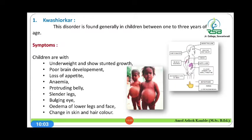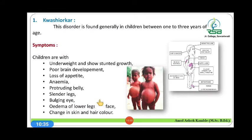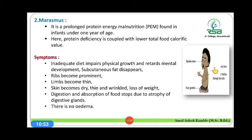The symptoms of Kwashiorkor appear in children having the age group of 1 to 3 years. These children are underweight and show stunted growth, poor brain development, loss of appetite, anemia, protruding belly, slender legs, bulging eyes, edema of lower legs and face, and change in skin and hair color. These are the various symptoms of Kwashiorkor due to protein deficiency.